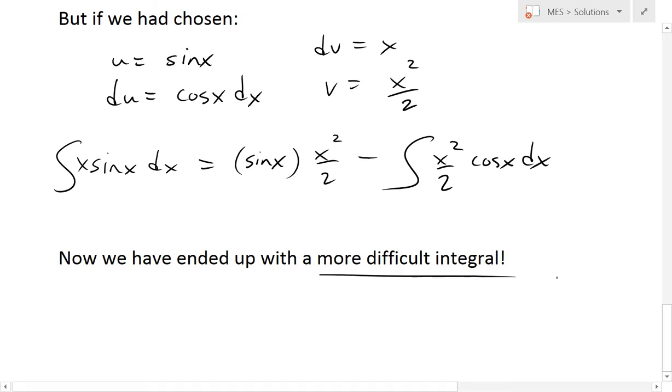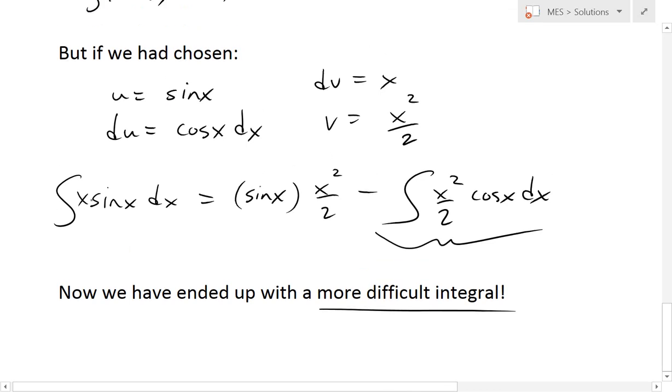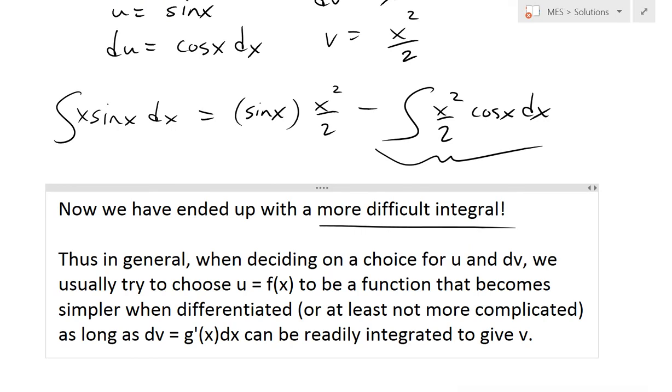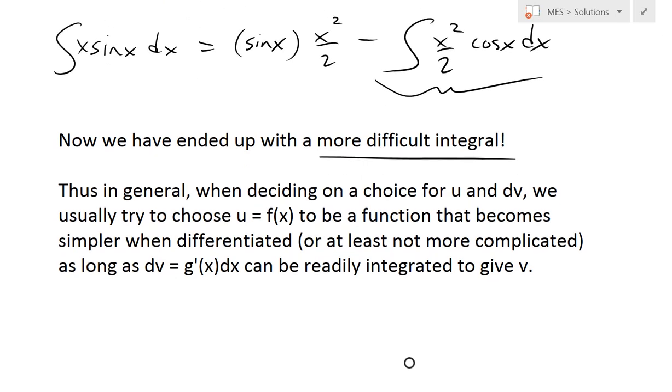As you can see, we have ended up with a more difficult integral in terms of x squared over 2 times cos(x) dx. Before we were just dealing with x, now we're dealing with a square of x, which is pretty hard to do when you combine it with the trigonometric function cos.